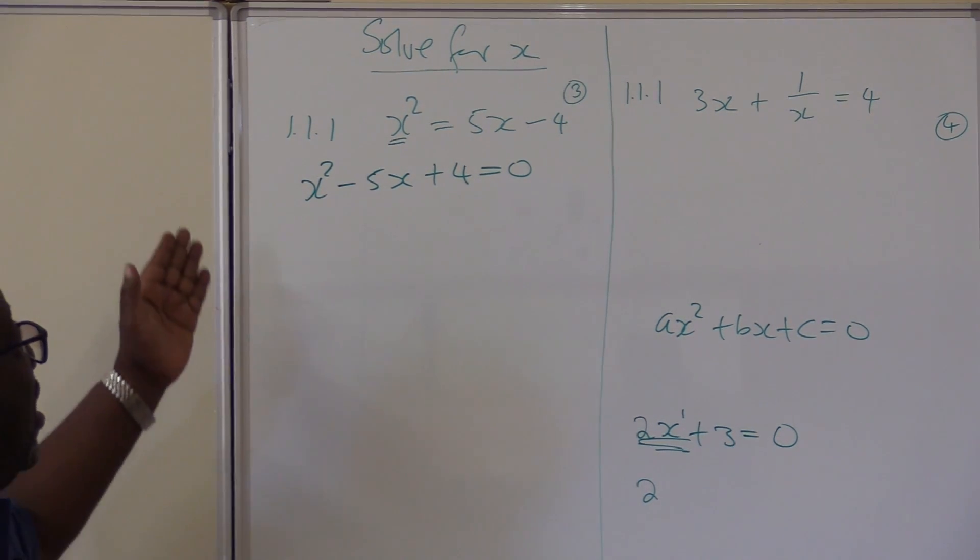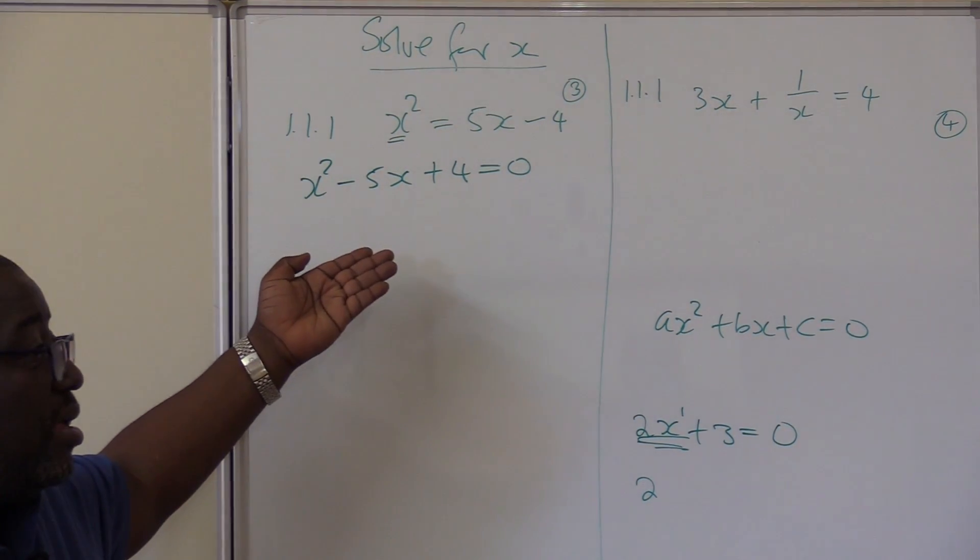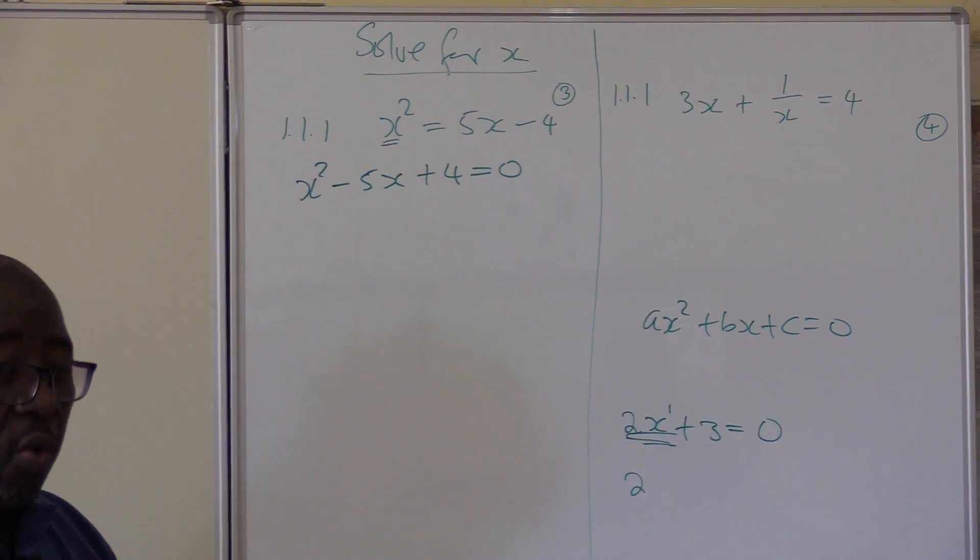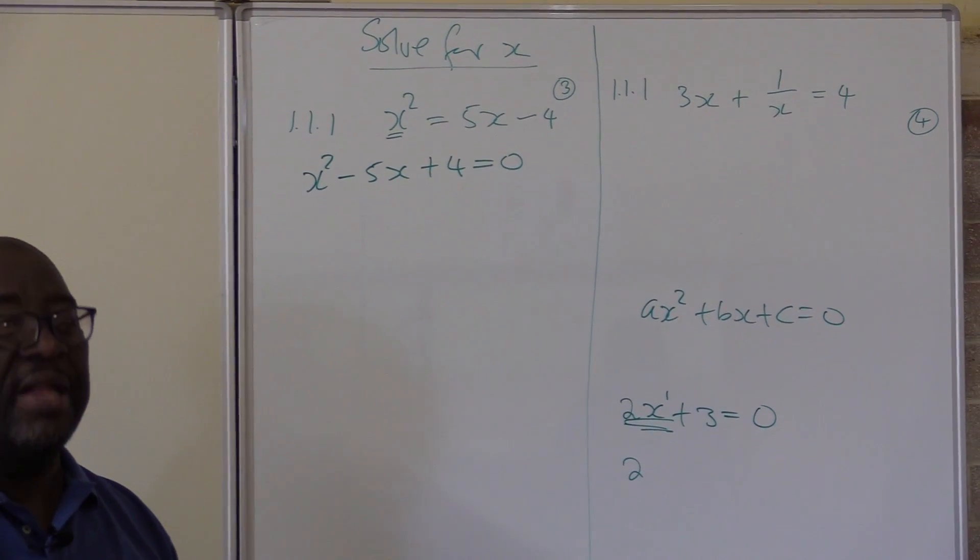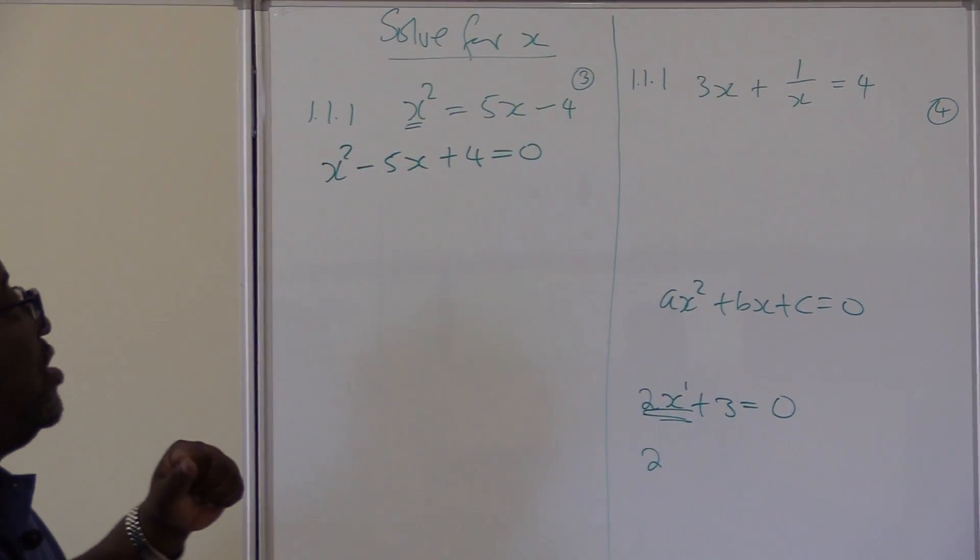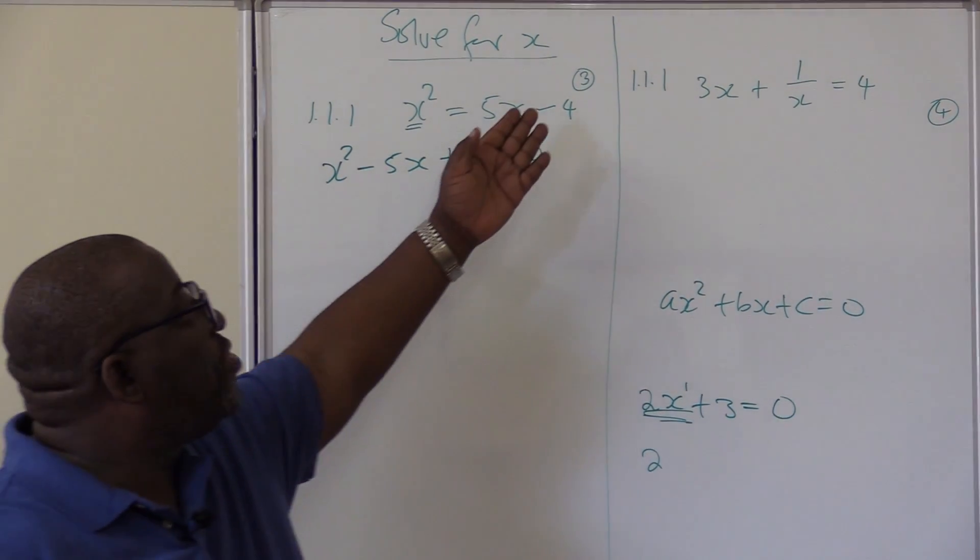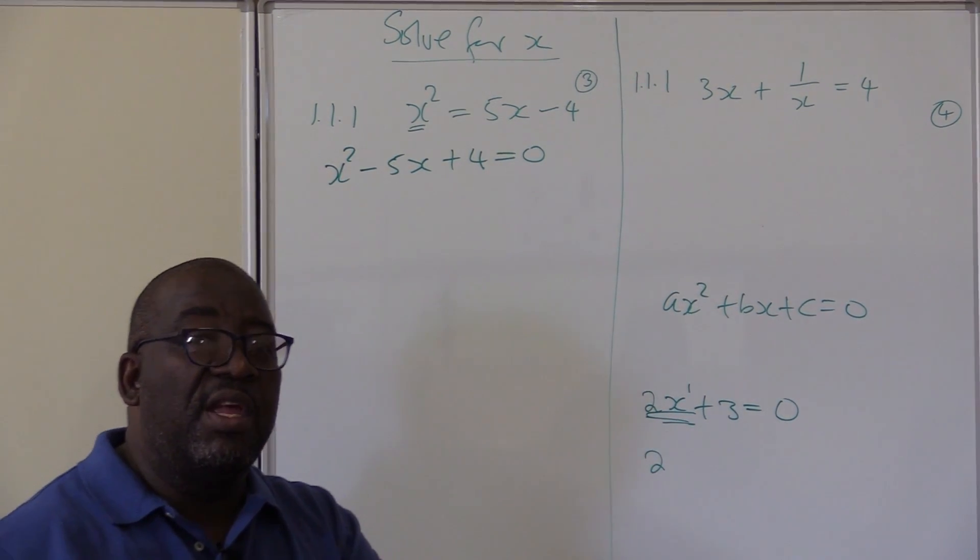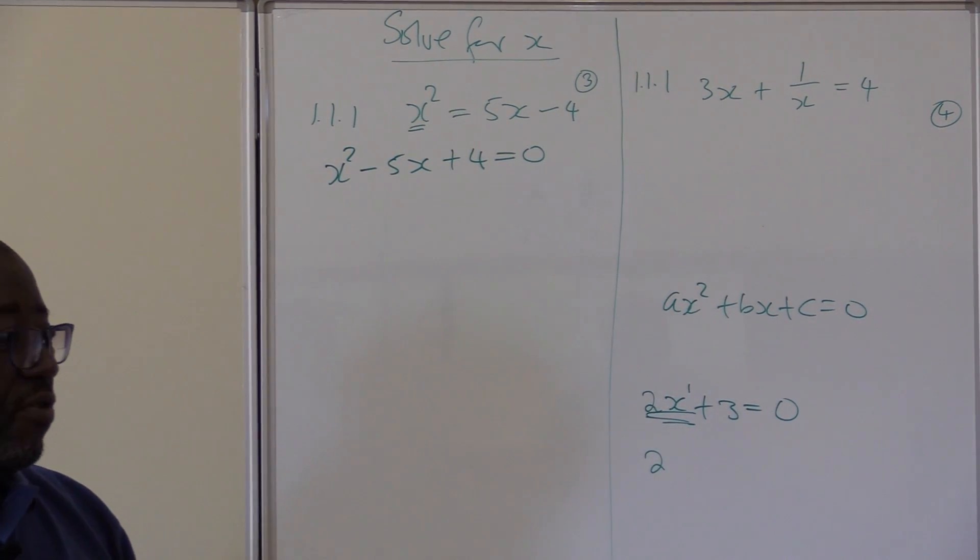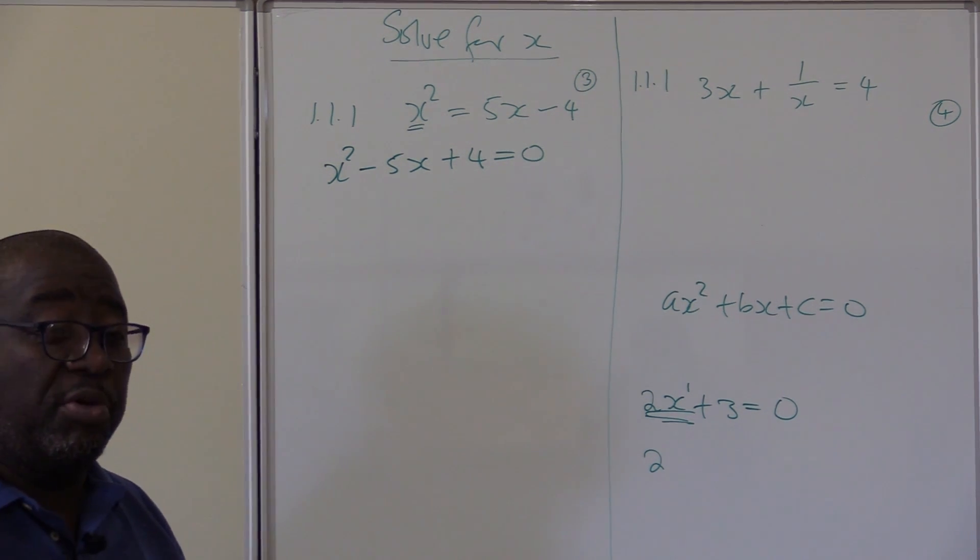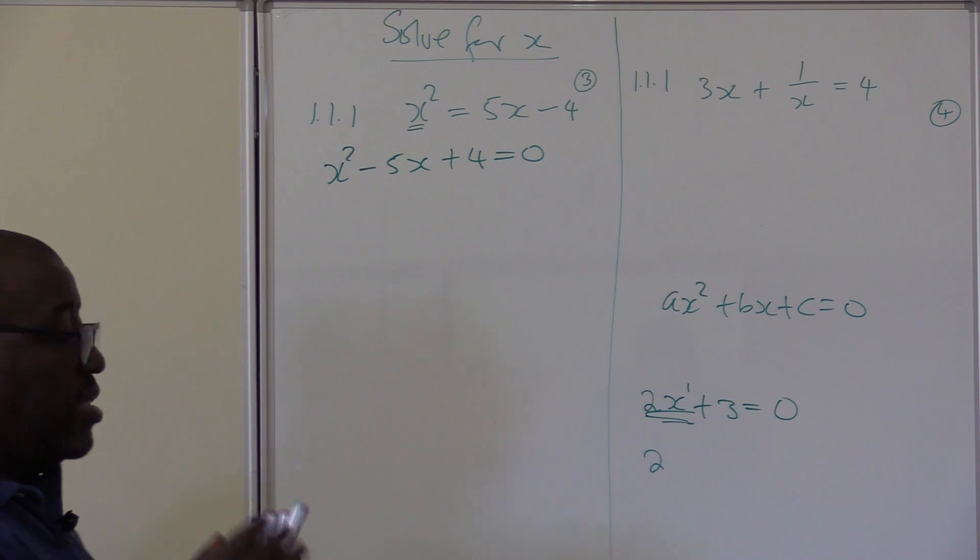You can tell what is a there - it is 1. What is b? It is minus 5. And what is c in this particular case? It is 4. Once it is in that form you can factorize. Remember the max will play a key role as well. If it goes to 5 max and says correct to decimal place, it will be another topic - the quadratic formula. Make sure that you have got 0 on the right hand side.